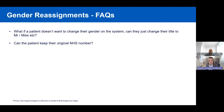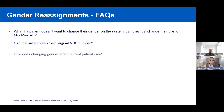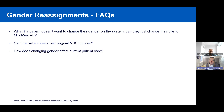If the patient wants to keep their existing NHS number, that is possible. Current guidance stipulates the NHS number should be changed, but a patient can forego that right. If that is the case, it is encouraged that the patient signs something in writing to be stored in the medical record, to prevent any come-back on the practice should previous names or genders be disclosed in error.